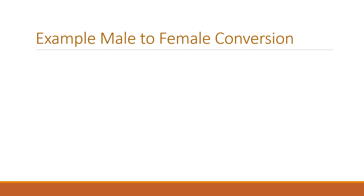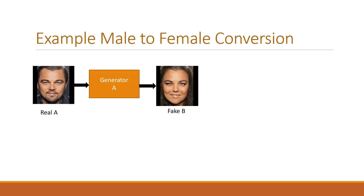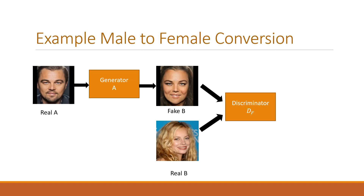The CycleGAN model implements both a male-to-female conversion and a female-to-male conversion. For simplicity, I will talk about male-to-female conversion as an example. Our model receives a real male image as input; this image is fed through a generator which converts the male image into a fake female image. This image is then fed into a discriminator along with real images of females, and the task of the discriminator is to identify the differences and distinguish between what is a real image and what is a fake image.